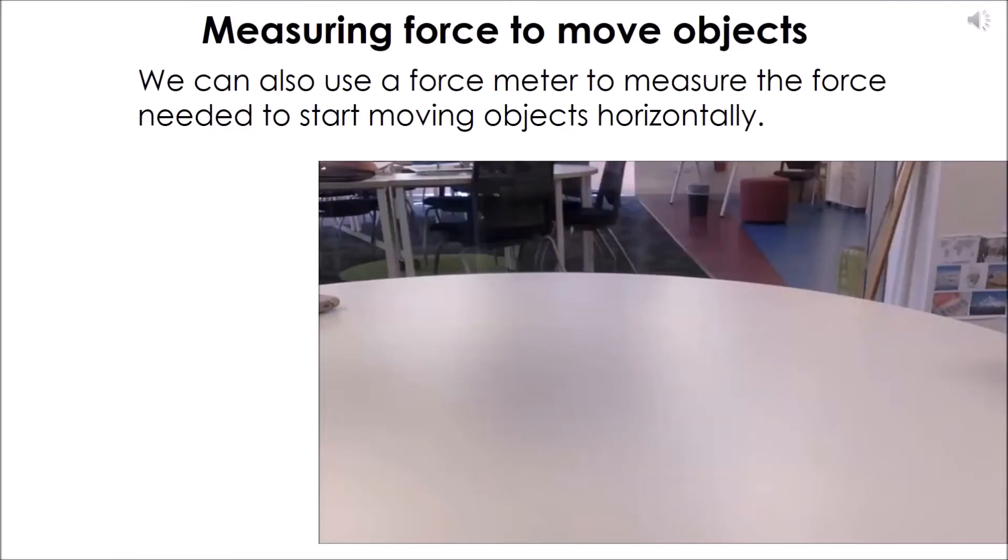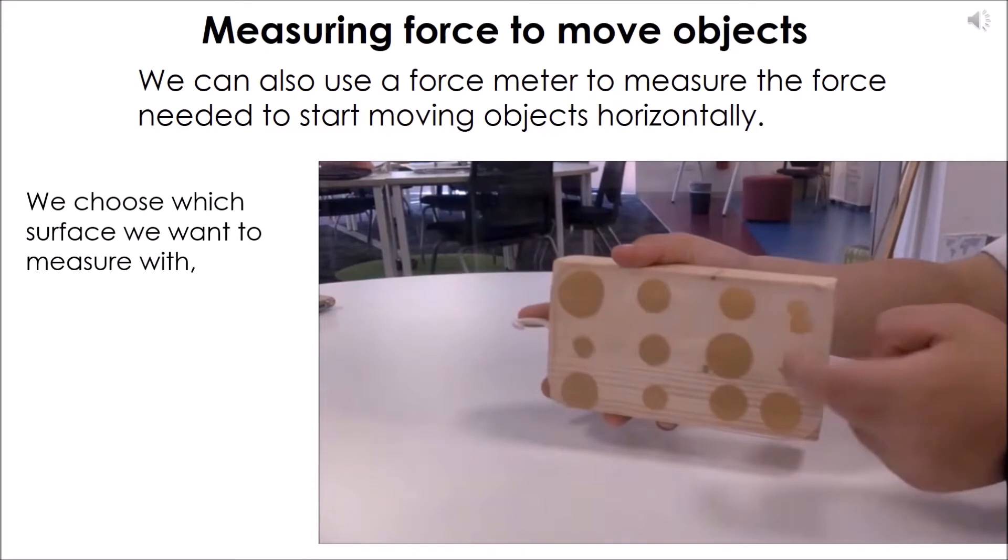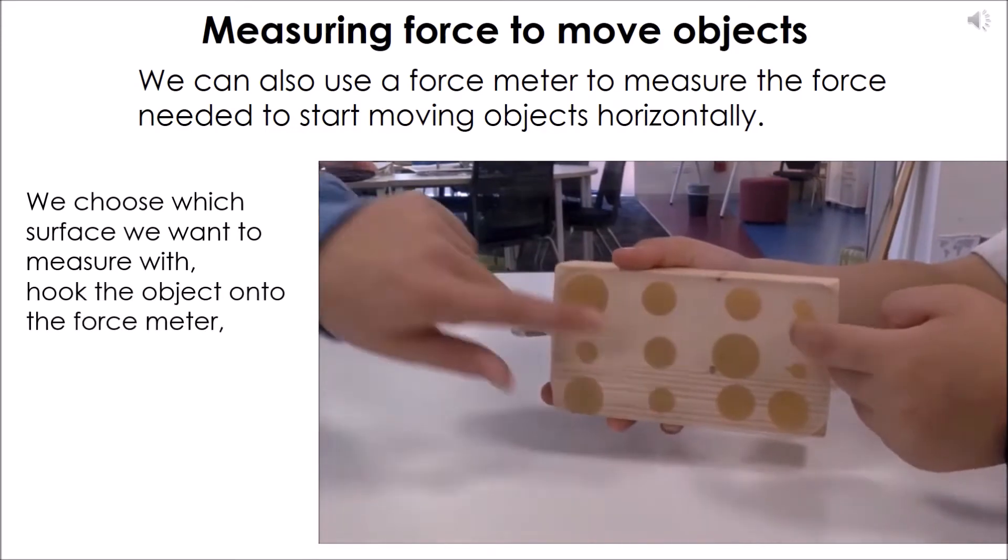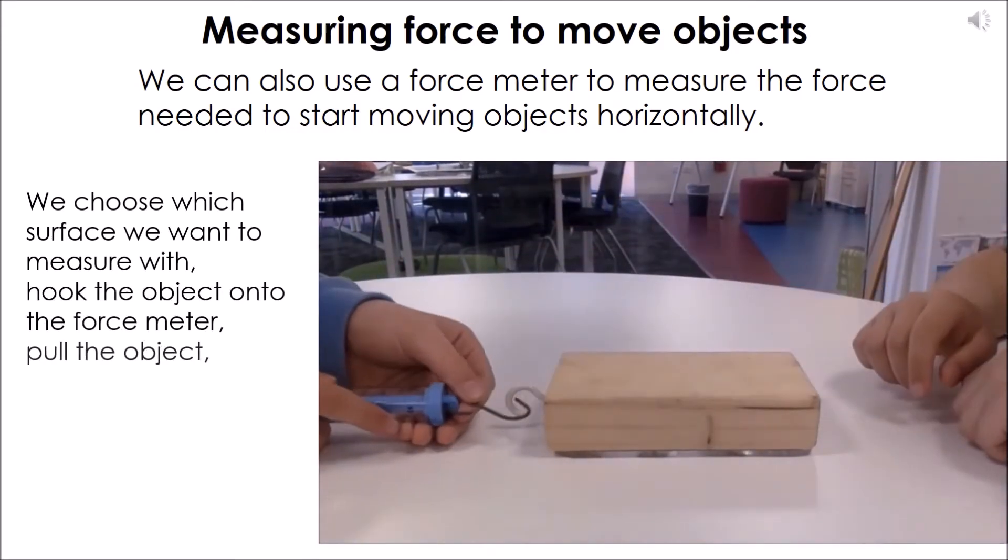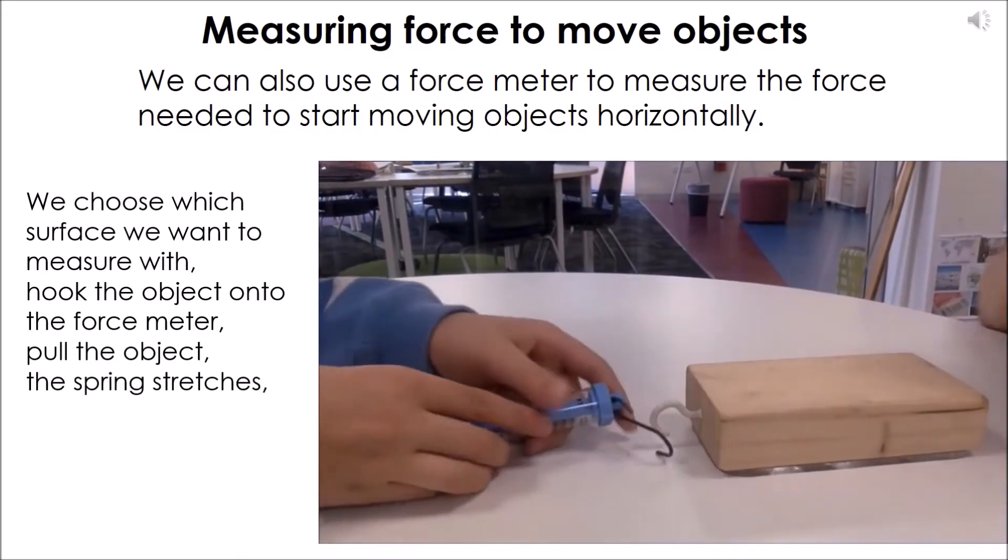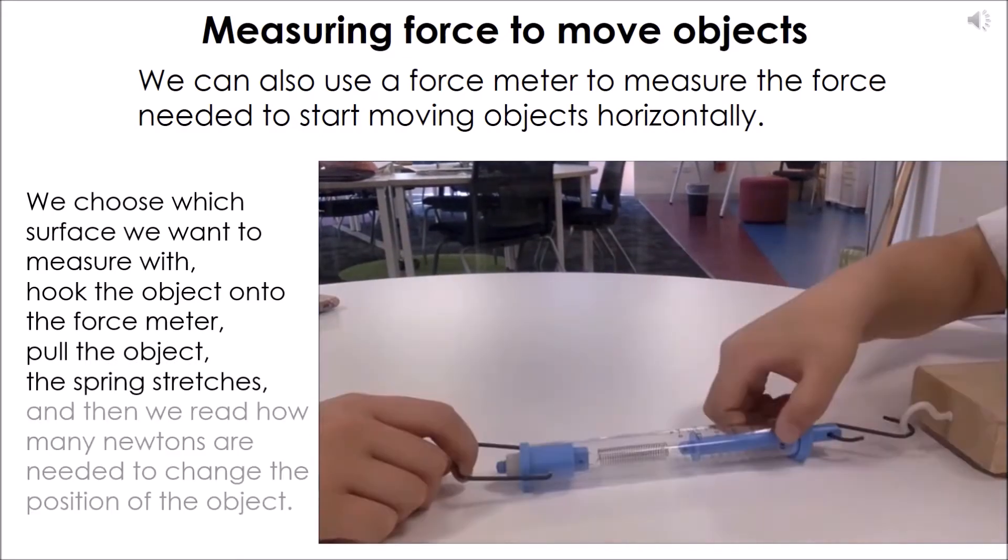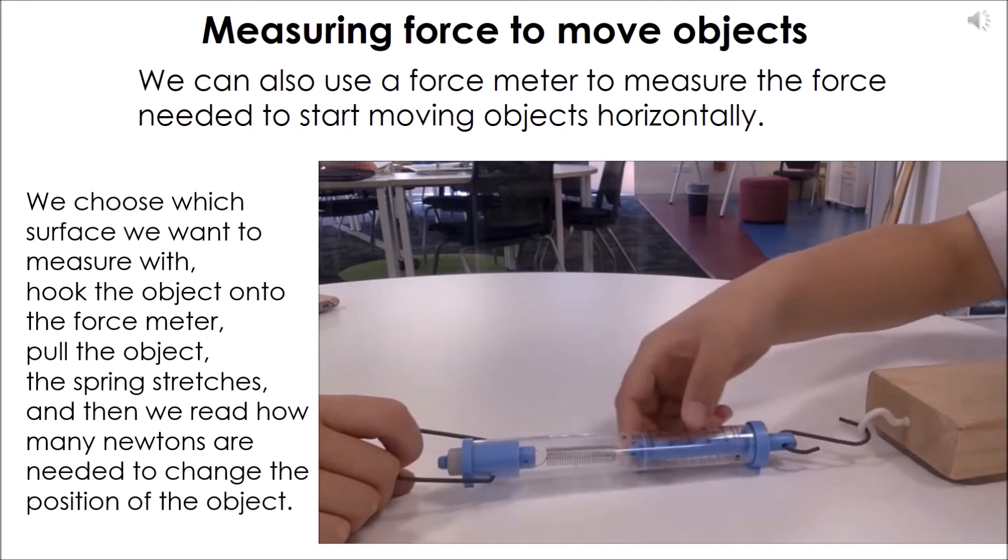We can also use a force meter to measure the force needed to start moving objects horizontally. We choose which surface we want to measure, hook the object onto the force meter, pull the object, the spring will stretch, and then we read how many newtons are needed to change the position of the object.